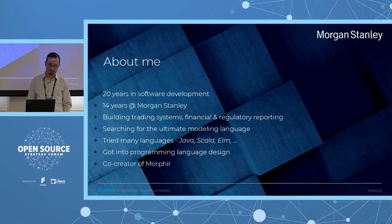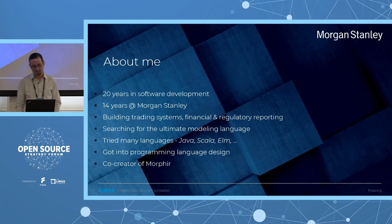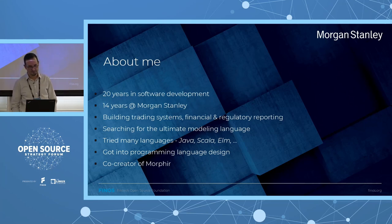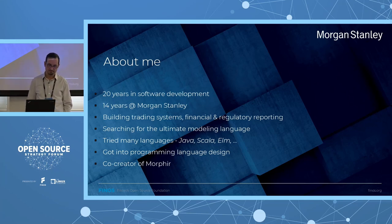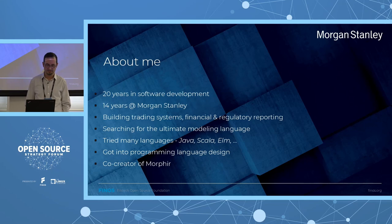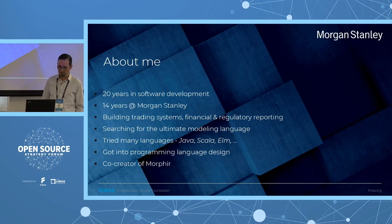Along the way I tried many languages. I started as a Java developer, moved on to Scala, and nowadays I'm doing a lot of Elm coding. Elm is a functional programming language, so you can see the progression as I moved from object-oriented towards more and more functional through Scala, which supports both. I got into programming language design — and you'll see how that's relevant to the presentation. Finally, I'm a co-creator of Morpher, responsible for most of the core coding.